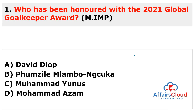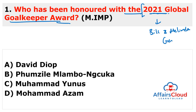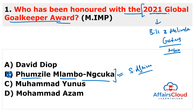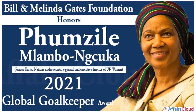Here is the question in the most important section: who has been honored with the 2021 Global Goalkeeper Award? The keyword here is the 2021 Global Goalkeeper Award, which is given by the Bill and Melinda Gates Foundation — basically a type of NGO. The answer is B, that is Fumzile Lambo Nuka, who belongs to South Africa.